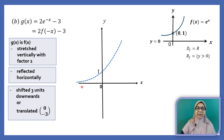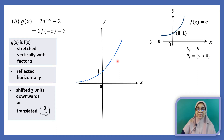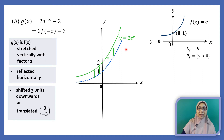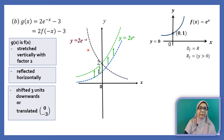We have here the parent function e to the power of x. We are going to stretch the graph vertically with factor 2. The point (0, 1) is stretched to (0, 2), giving us the curve y equals 2e to the power of x. Next, we need to reflect the graph horizontally across the y-axis, giving us y equals 2e to the power of negative x.